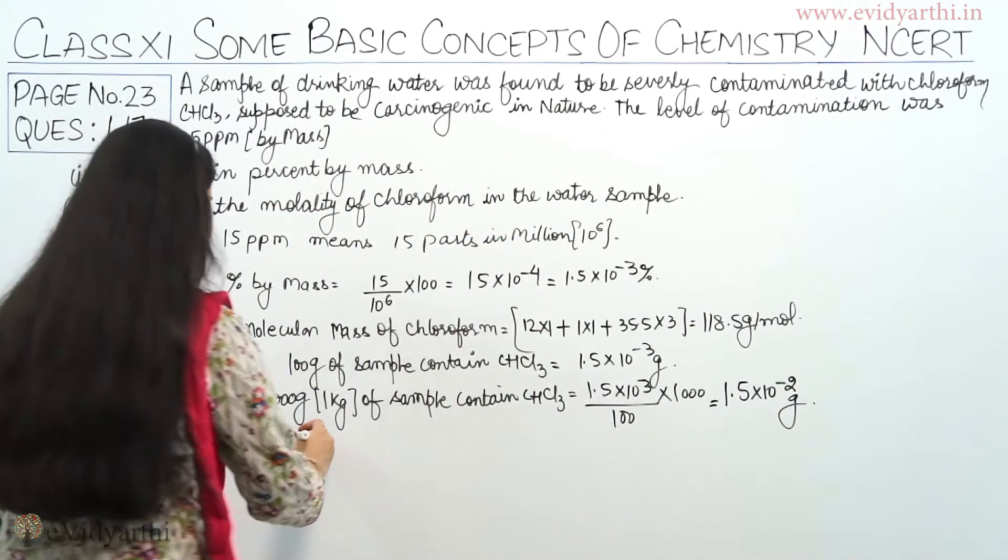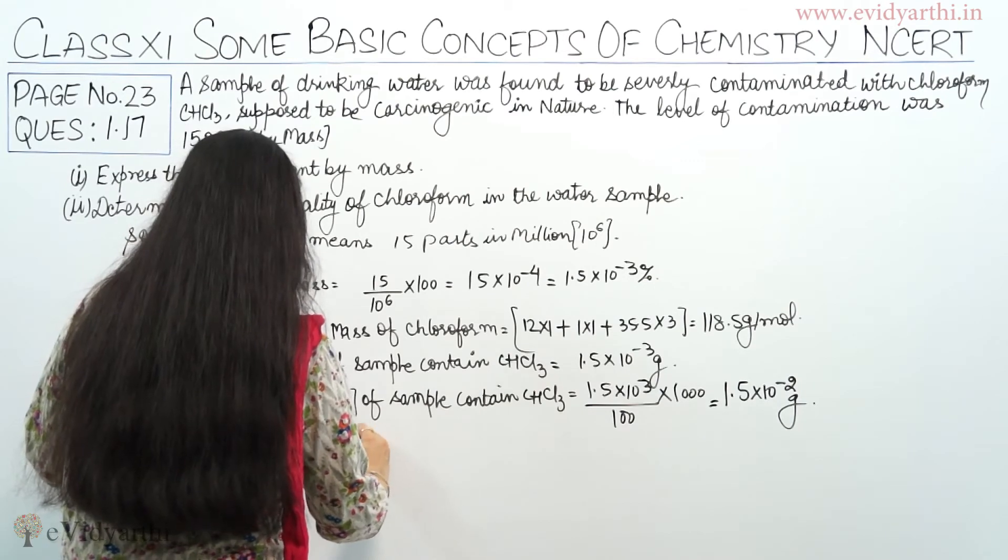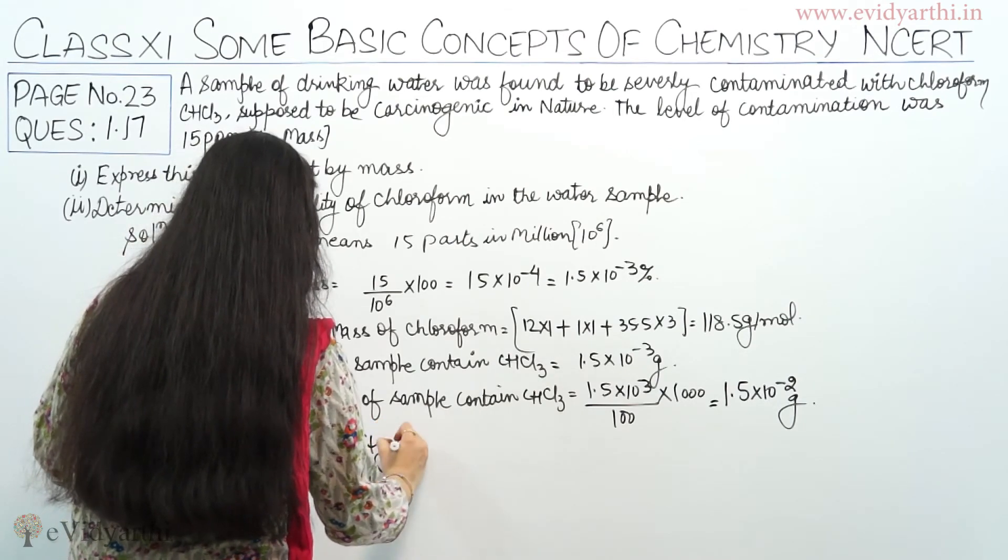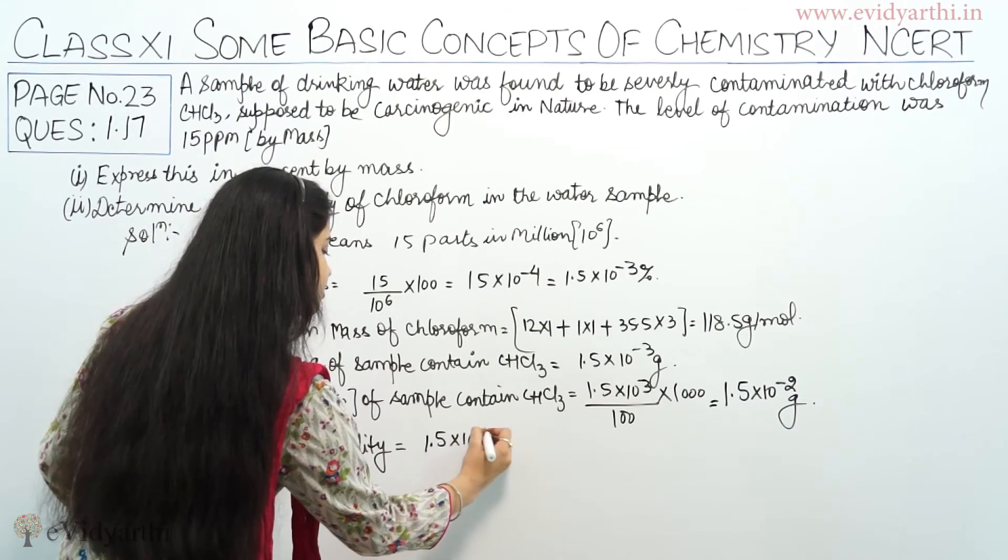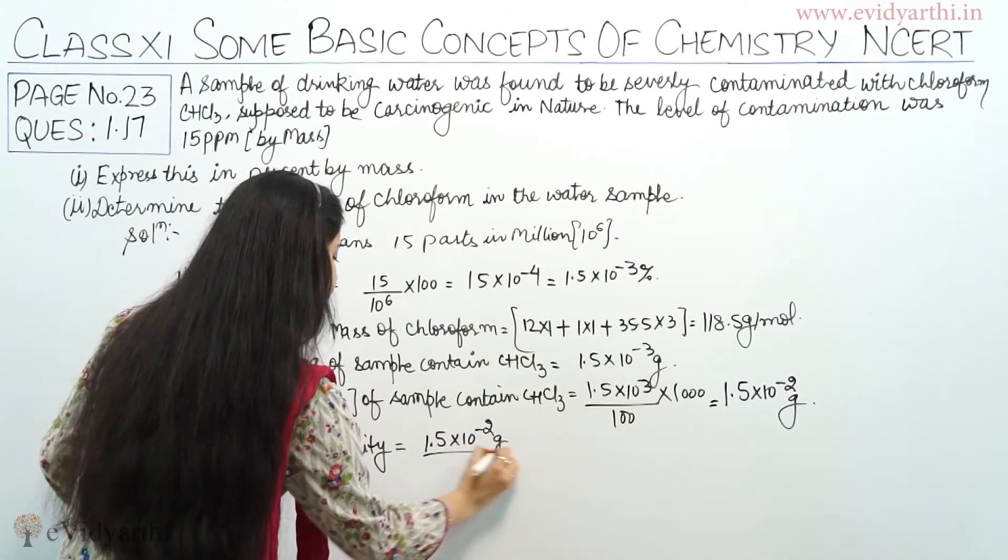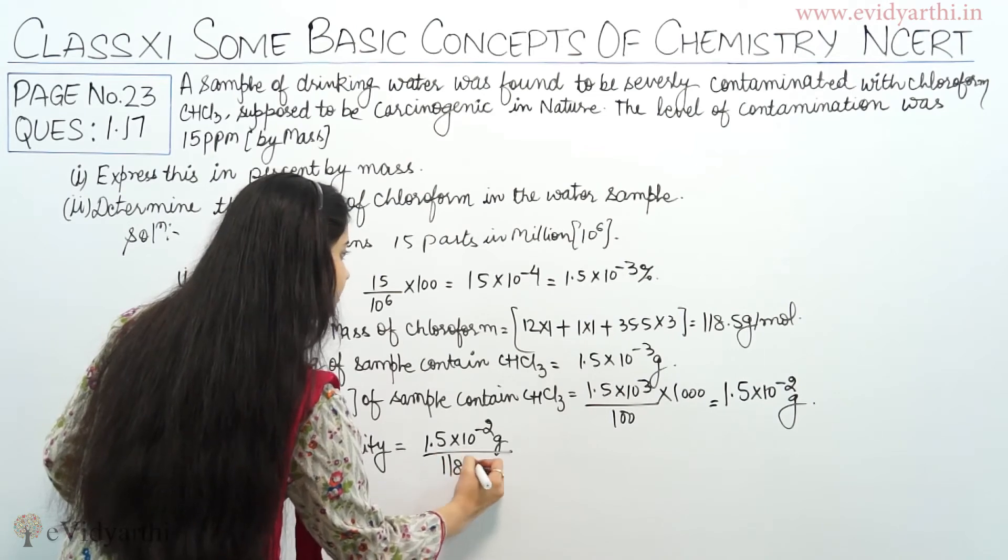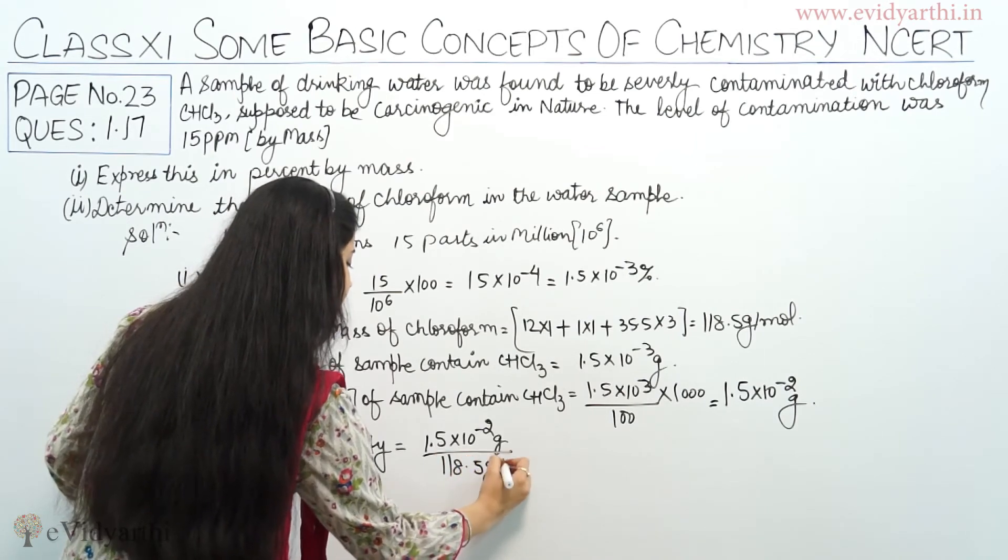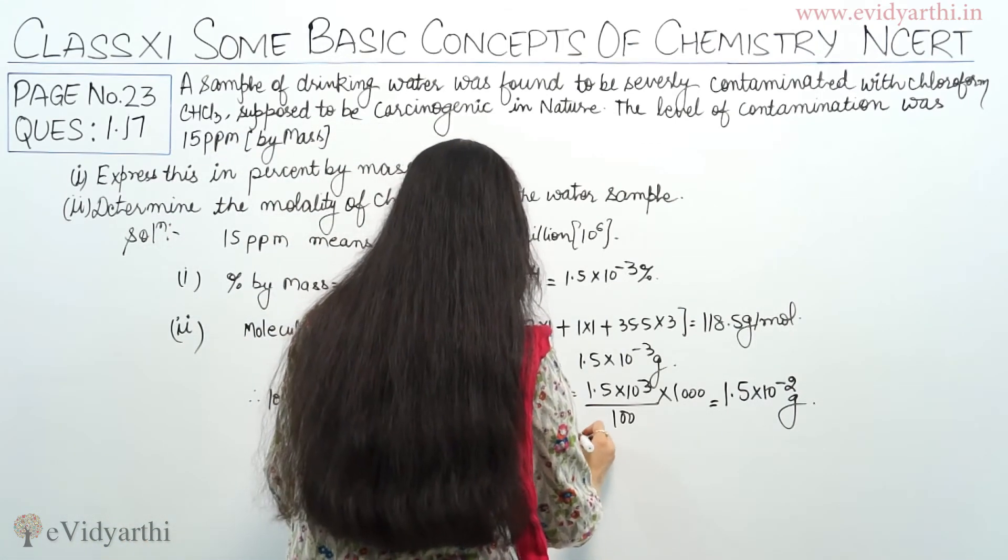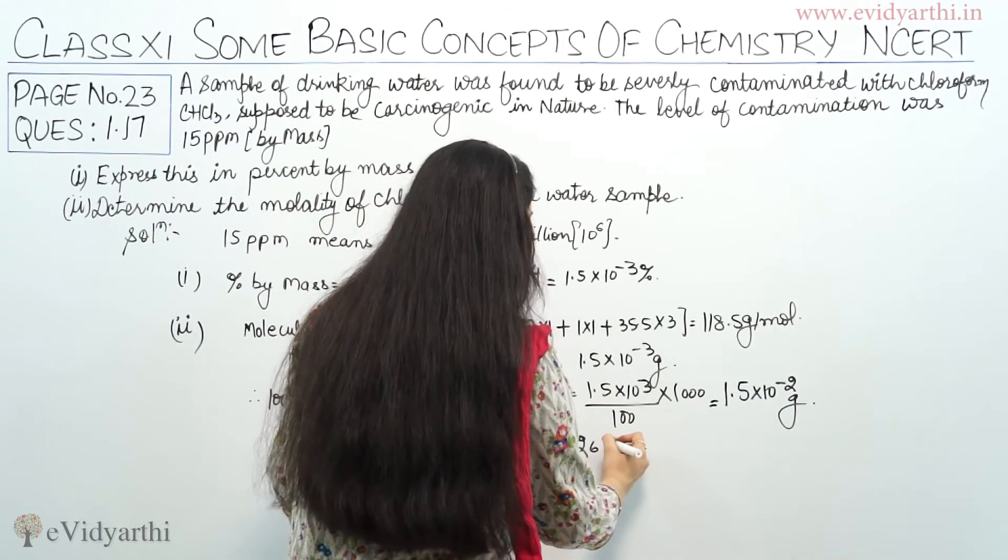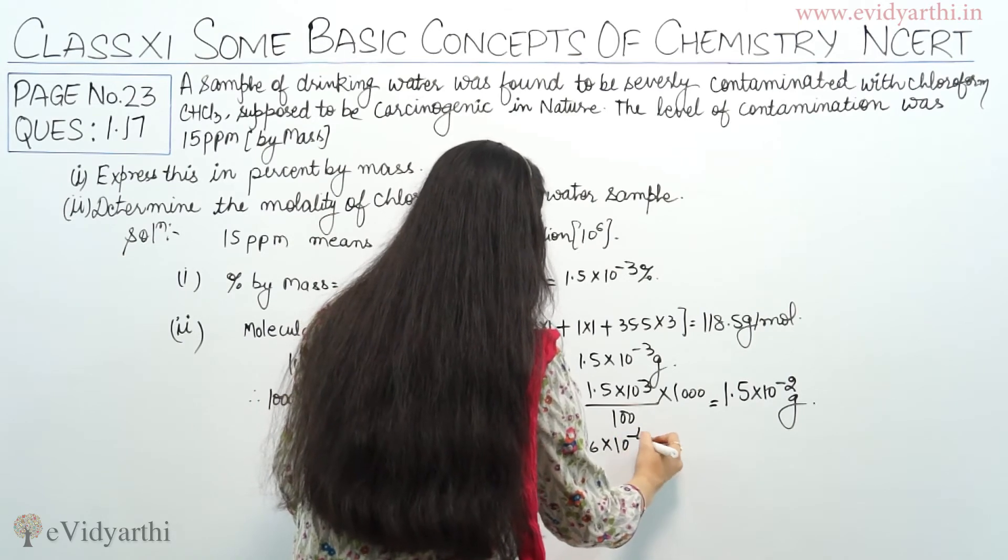Now we are coming to the molality. Therefore molality equals 1.5 into 10 raised to power minus 2 grams divided by 118.5 gram per mole, which equals 1.8 into 10 raised to power minus 4.